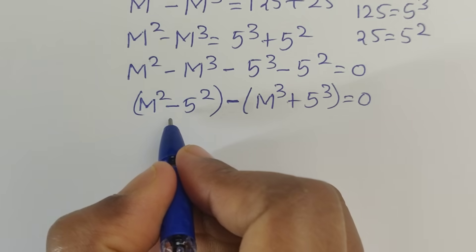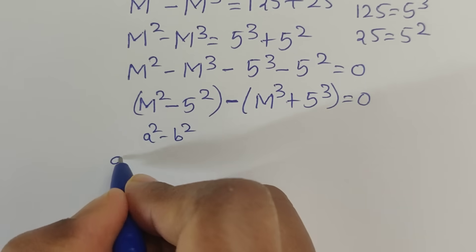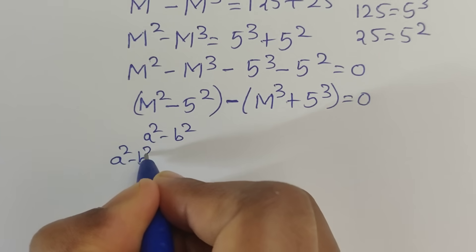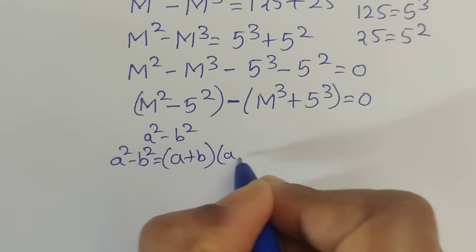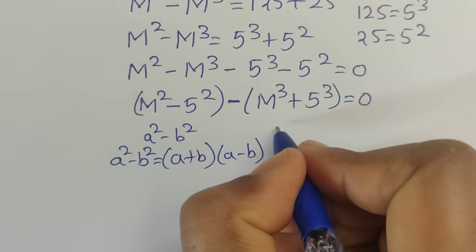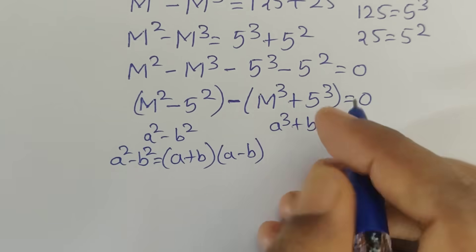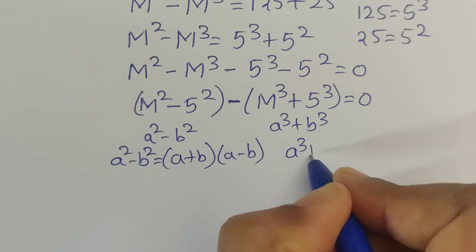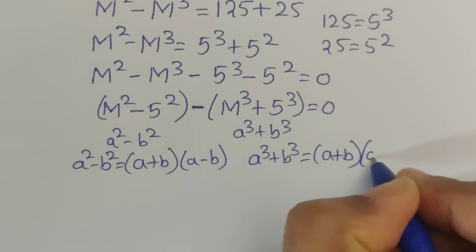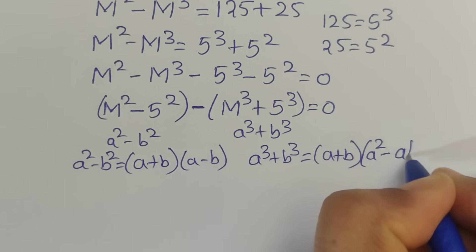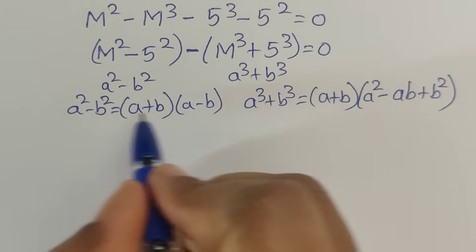So now this is in the form of a cubed plus b cubed. We know this formula: a cubed plus b cubed equals a plus b times a squared minus a·b plus b squared. So we use this formula.